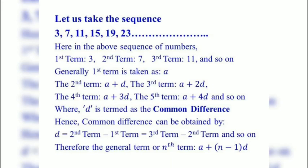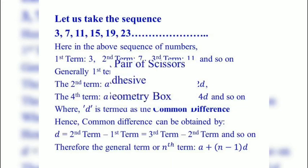Where D is termed as the common difference. Hence, common difference can be obtained by D equals second term minus first term or third term minus second term and so on. Therefore, the general term or nth term is A plus (N minus 1) into D.